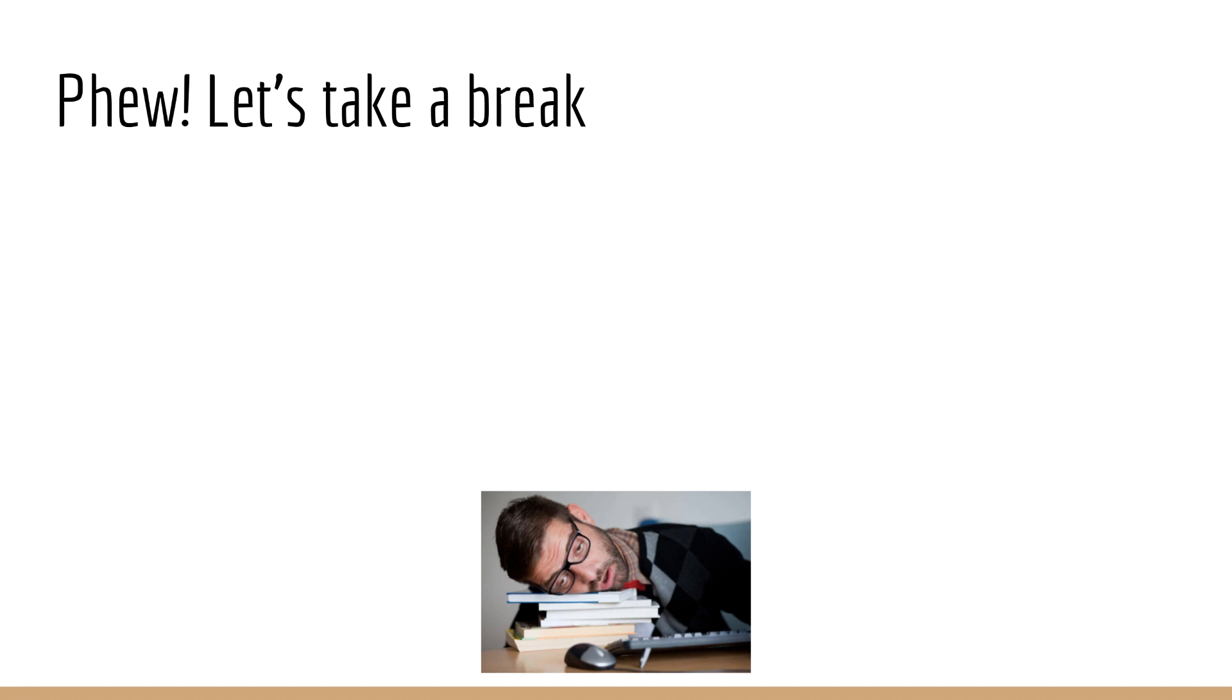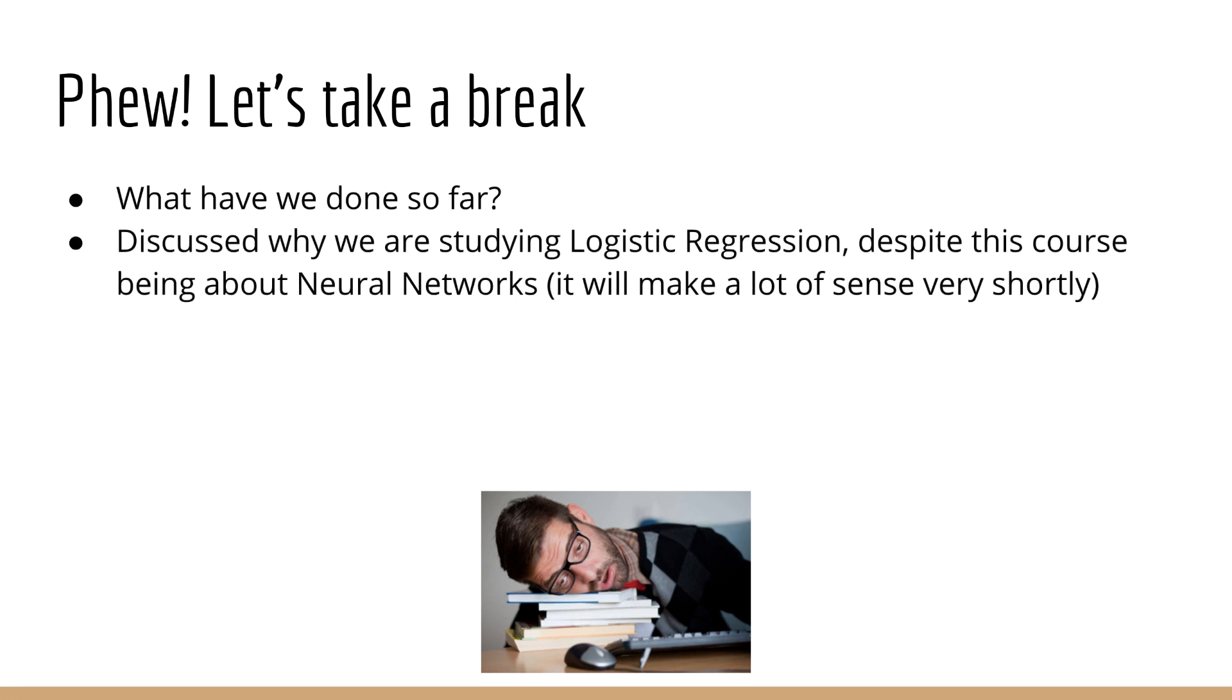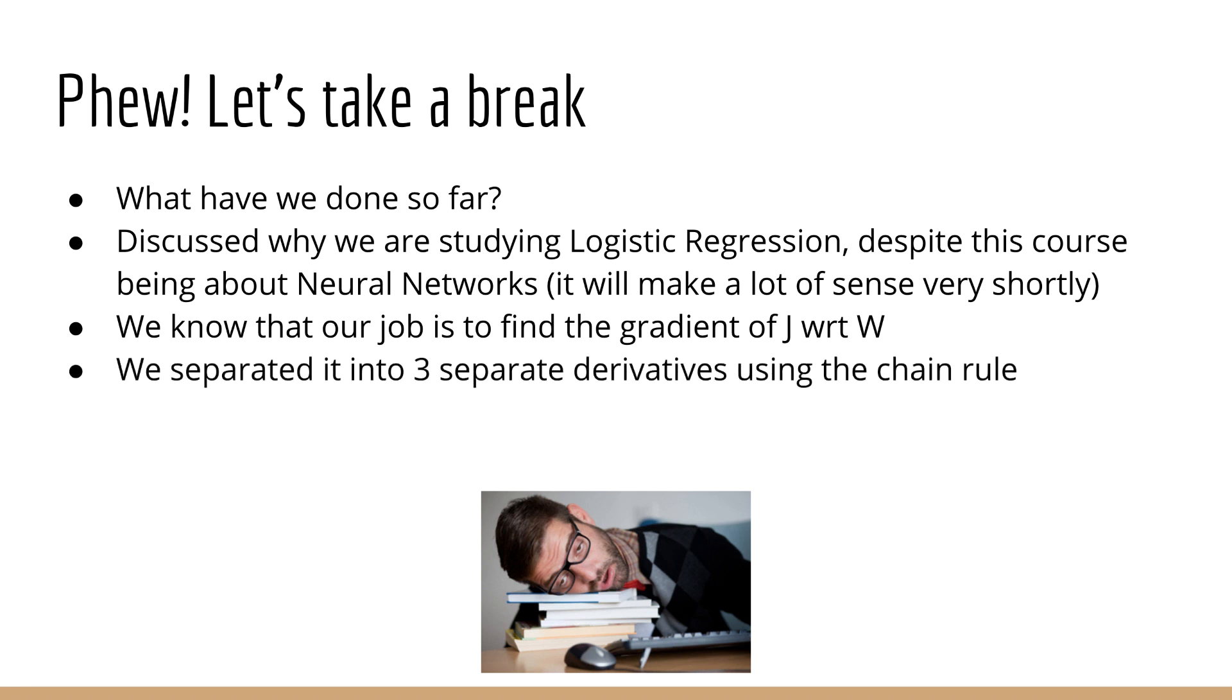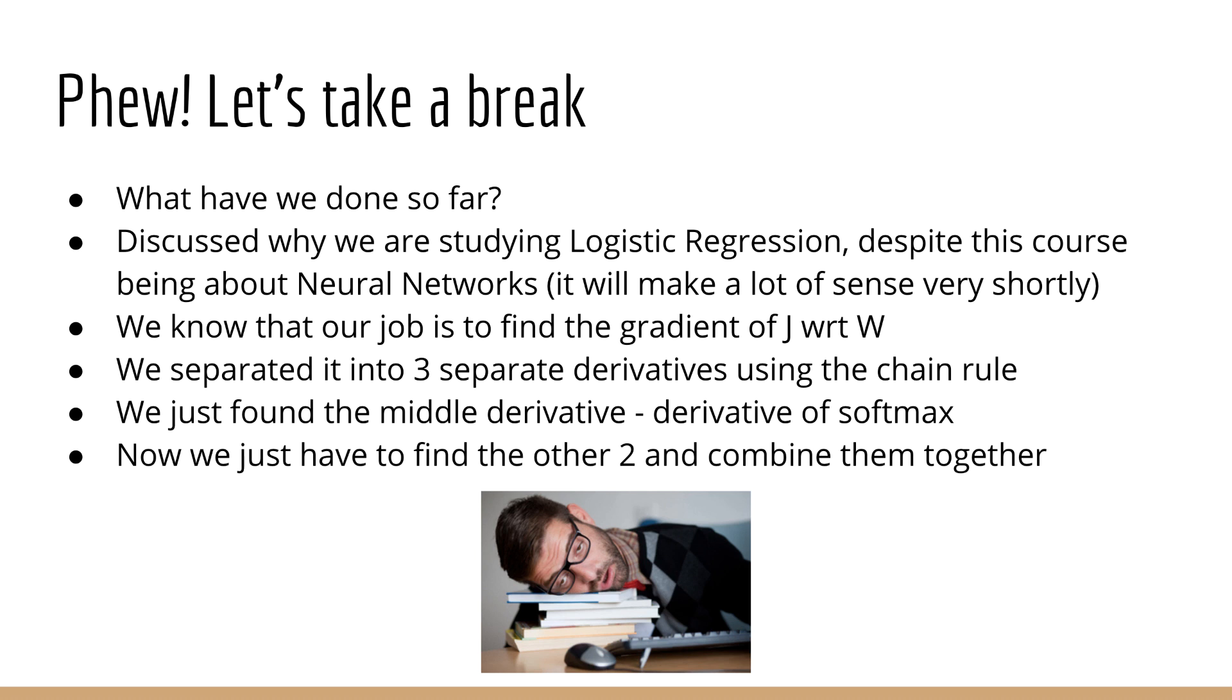Since this lecture has been pretty long already, we are going to end things here and pick up where we left off in the next lecture. To summarize what we've done so far, we explained why we're talking about logistic regression with softmax, even though this course is about neural networks. We know that the steps we have to perform to find the weight matrix w is to set up our objective function and find its gradient with respect to w and perform gradient descent. We separated this gradient into three distinct derivatives using the chain rule, and we just solved for the most difficult of these derivatives, which is the softmax. In the next lecture, we'll continue solving the other derivatives and combine them together to get our final gradient expression.